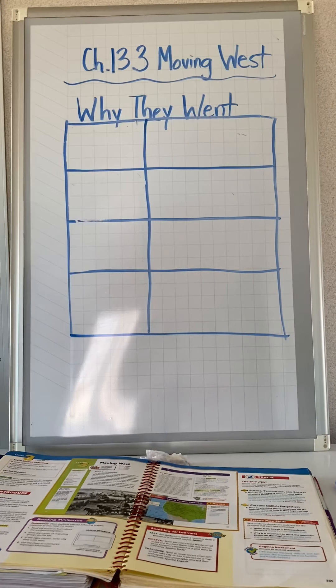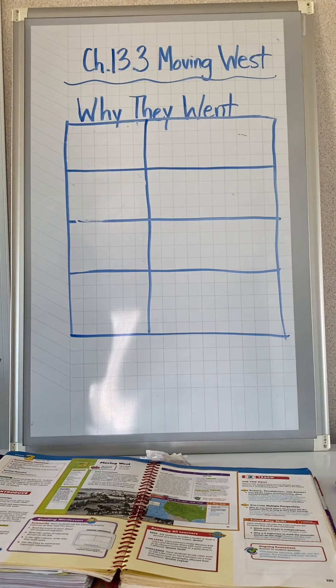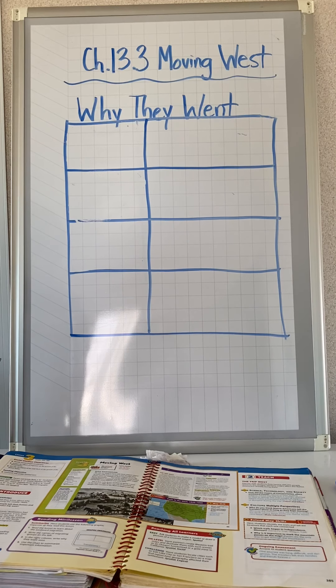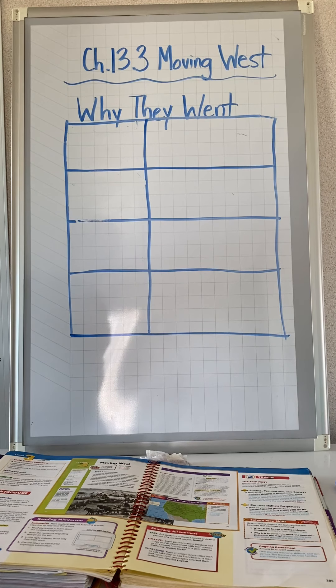Fifth grade, our next lesson for history is called Moving West. So it's moving on from all the inventions and now we have all this land to go travel and to get to know and to hopefully settle. This is all about Americans expanding and settling in the far western lands.